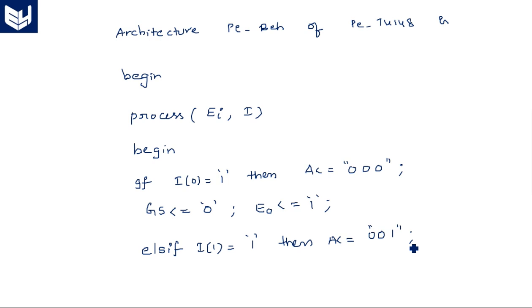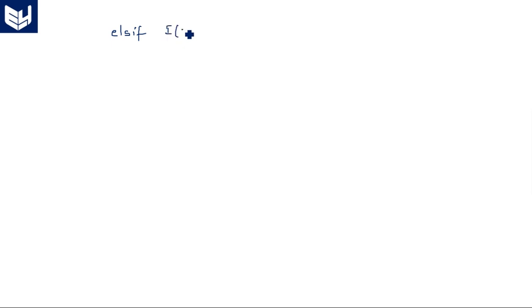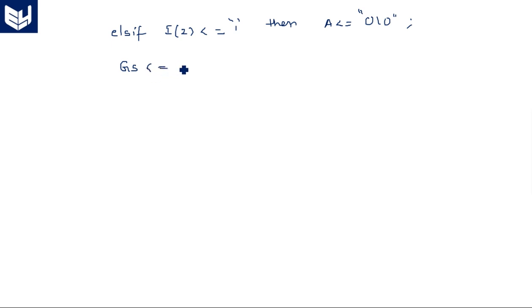Elsif I(1) = '1' then A is assigned with "001", group_select is equal to '0', and E0 is equal to '1'. Elsif I(2) = '1' then A is assigned with "010", GS is equal to '0', and E0 is equal to '1'.